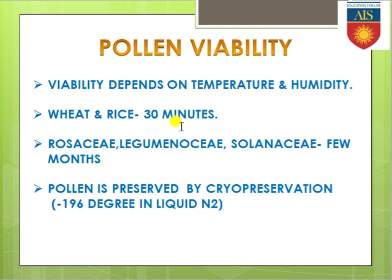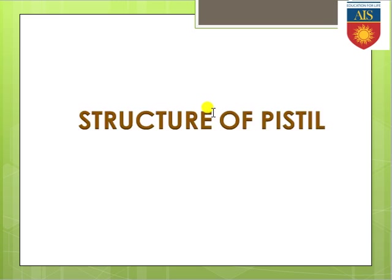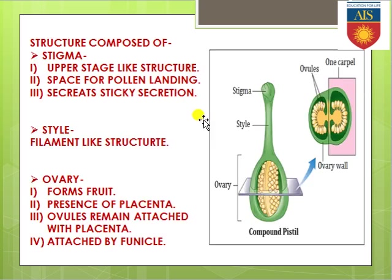Pollen viability can vary from plant to plant, and viability is always depending on temperature and humidity. Next, we are going to the structure of the pistil. We have already discussed the structure of the androecium in the previous part of this video, so here we will discuss the structure of the pistil.